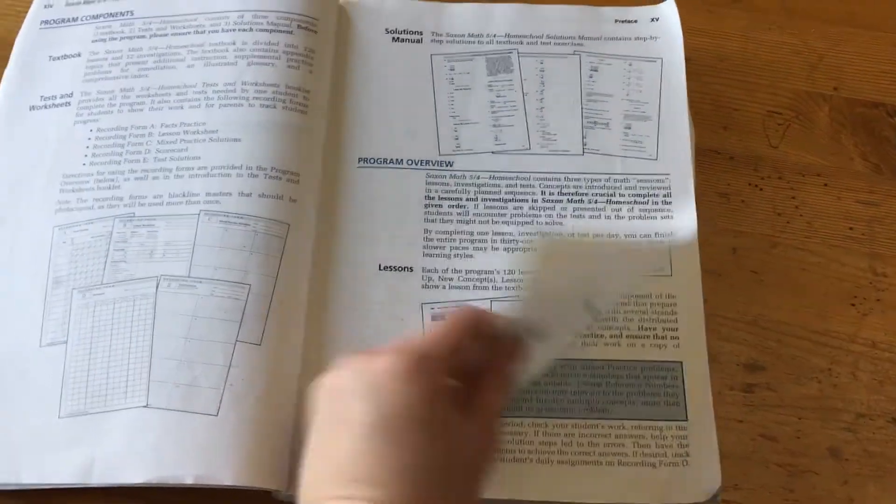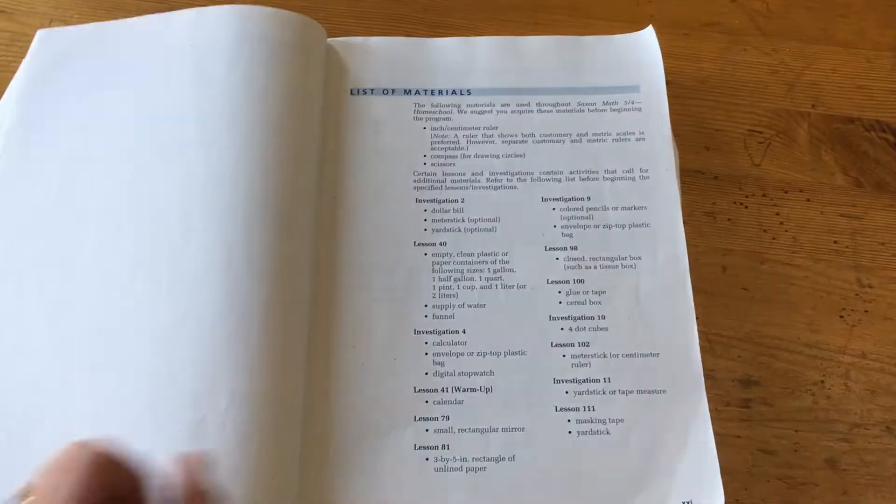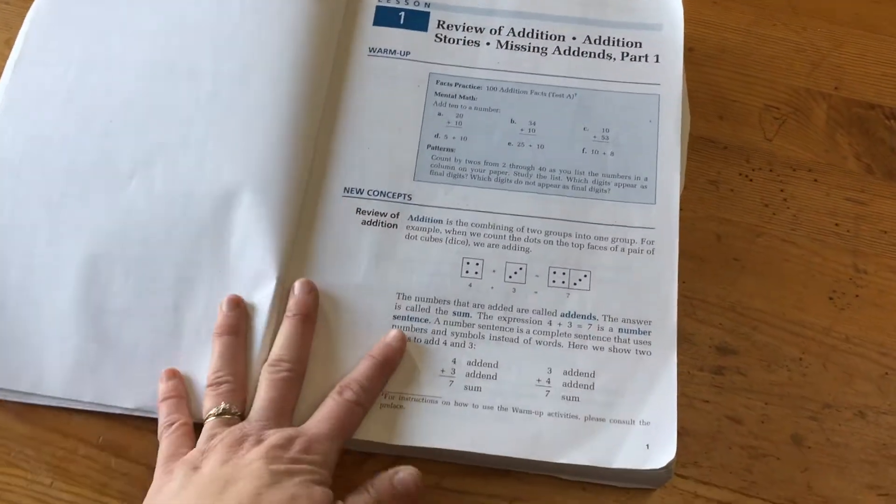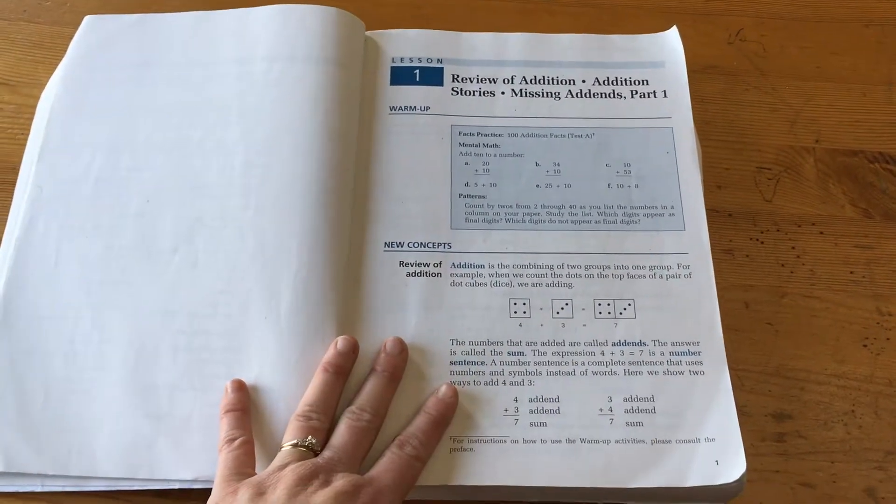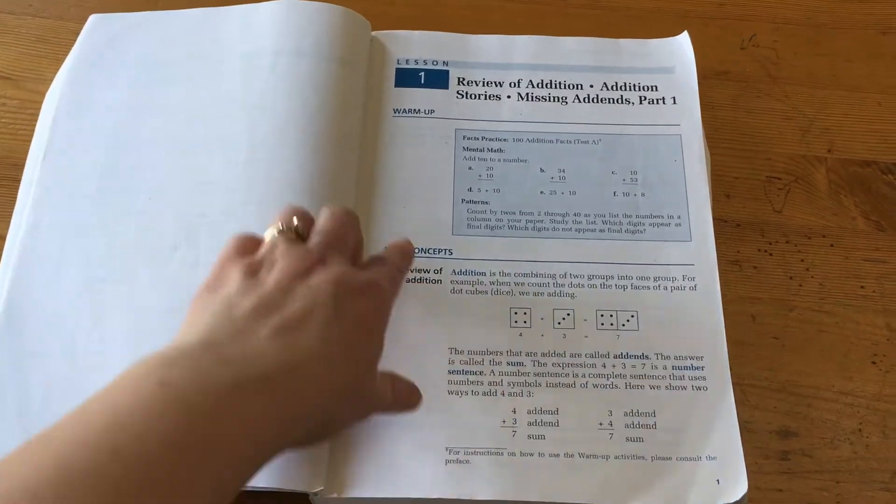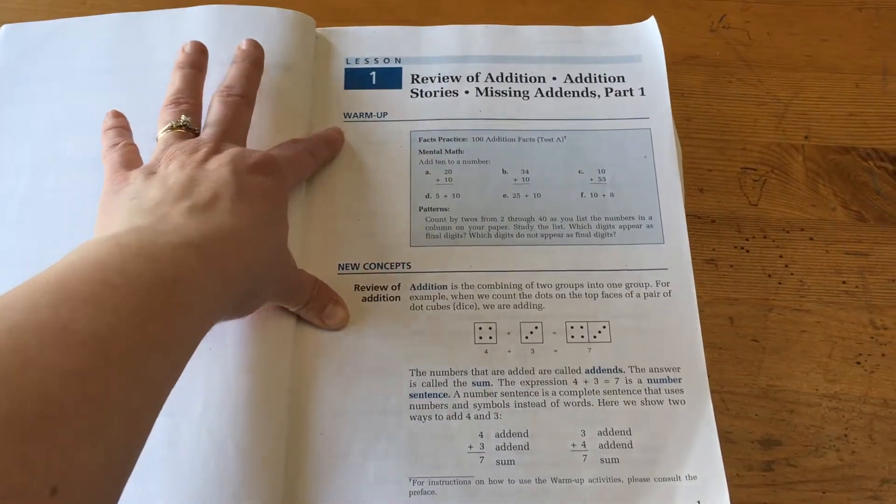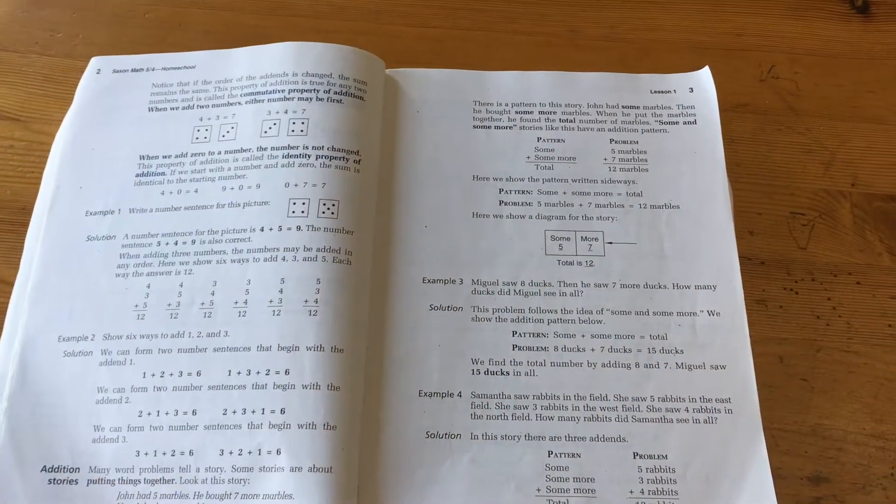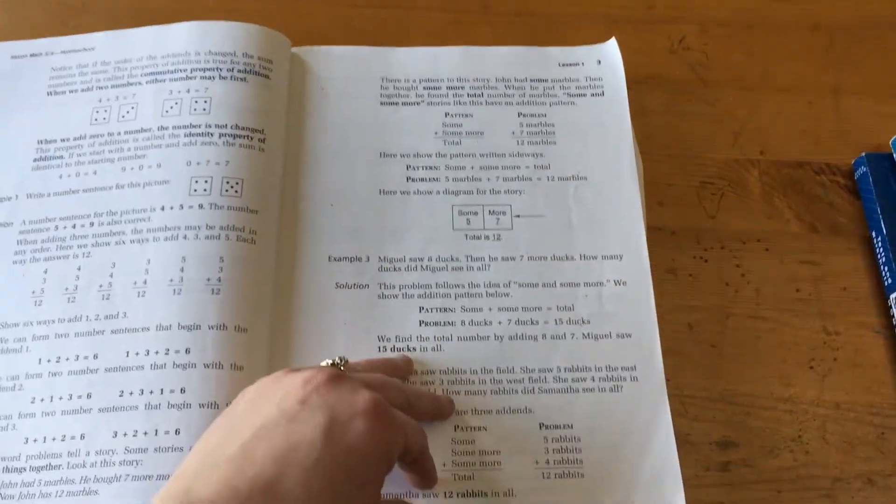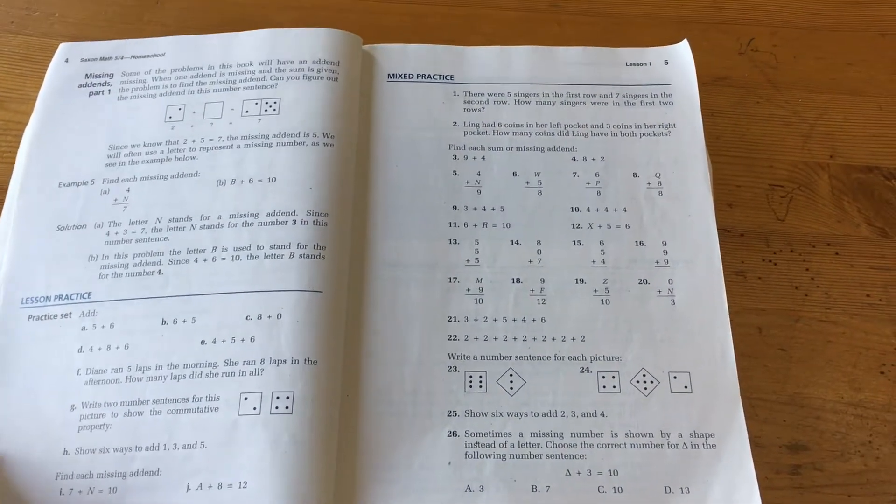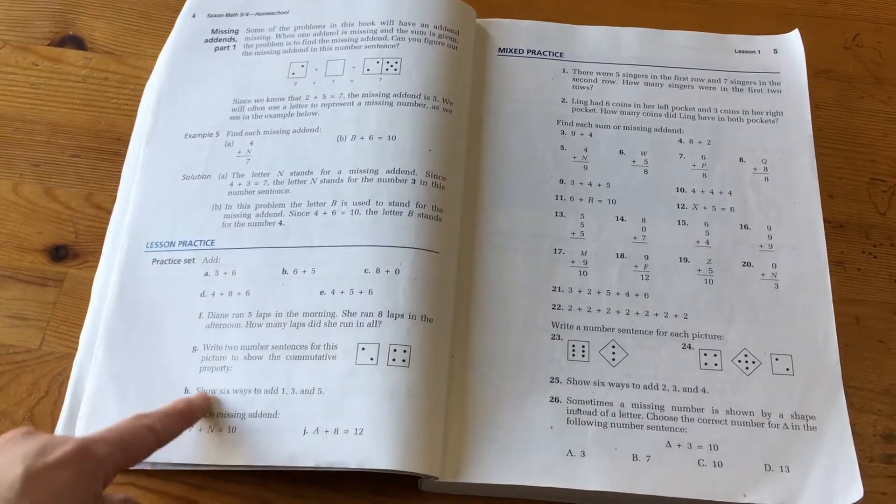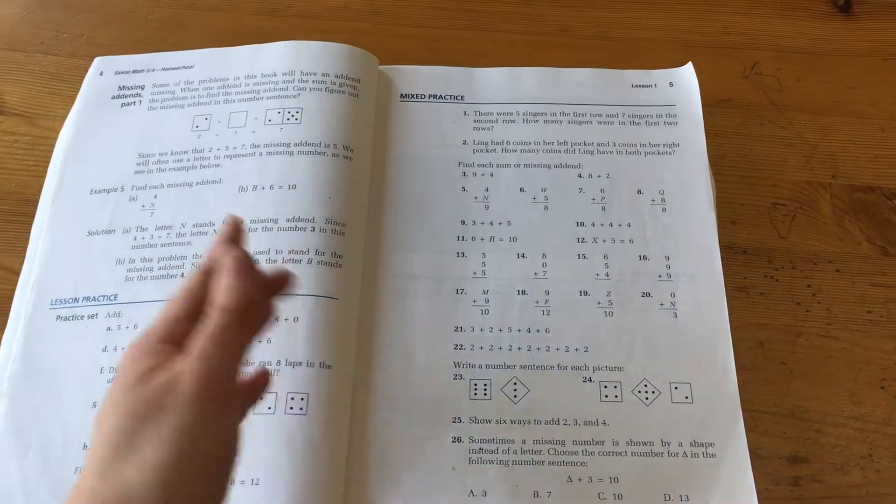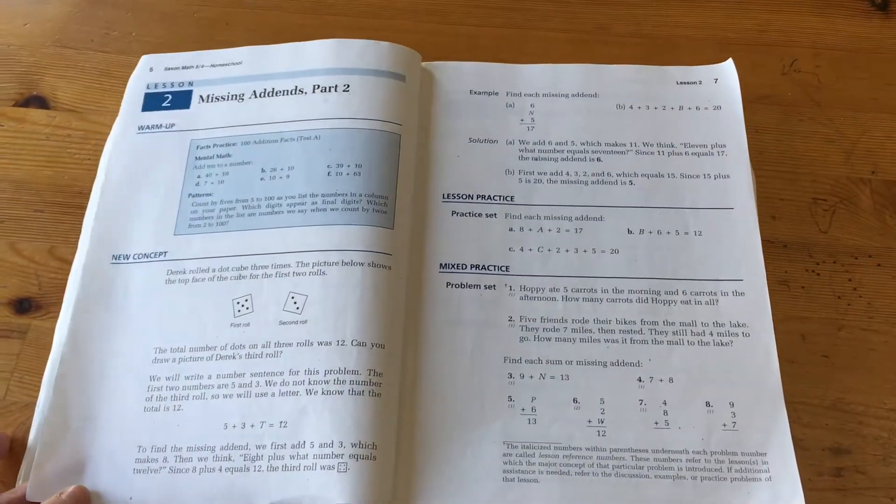So there's information about the program and then list of materials and right into the lesson. So these books are meant to be done independently as opposed to the younger ones which are done with a parent. So they start with a warm-up section. There's the new concept that they go through, they give examples of it. And then there's a section for the child to practice what they've just learned. And then there's what they call mixed practice which is like review from everything that they've done. And that's the lesson.